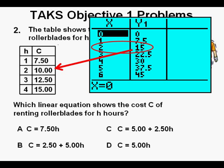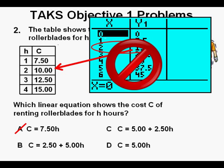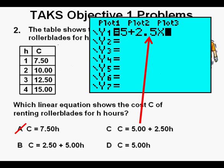But for two hours the charge from the equation in A is fifteen dollars, while the actual table of charges was ten dollars. So that makes it incorrect and we cross off A. Next we'll try answer C. We get to the table view by pressing 2ND then GRAPH.